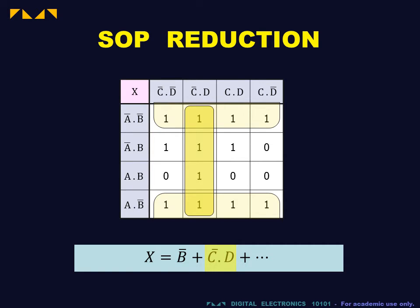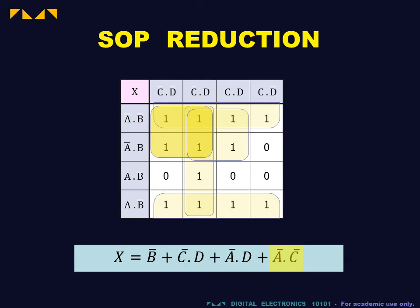Note that bag overlap is permitted. Then we place the A-bar D bag, and finally the A-bar C-bar bag. Because we have chosen the fewest largest bags to cover the ones, we now have the minimal SOP expression for the given map.